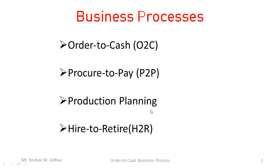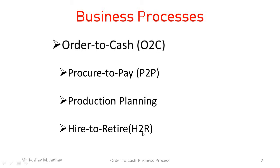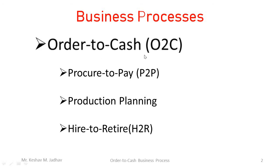Next is production planning, which is related to producing finished goods as per requirement. Next is hire to retire, also called the H2R process, which is related to the human resource department in an organization. In this video we will see the order to cash process, that is the O2C process.